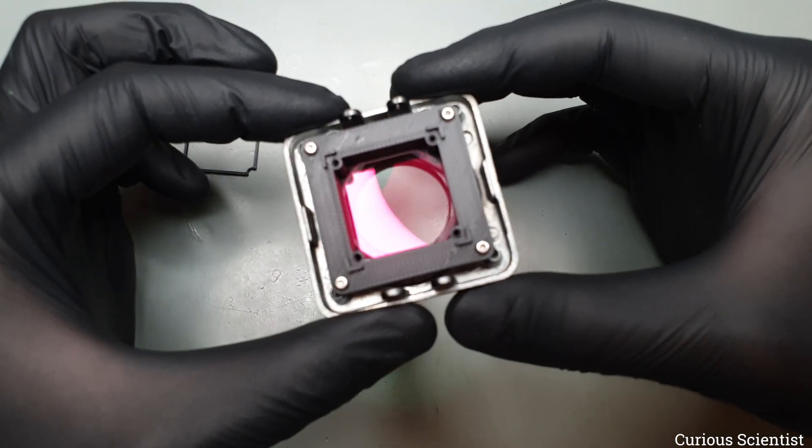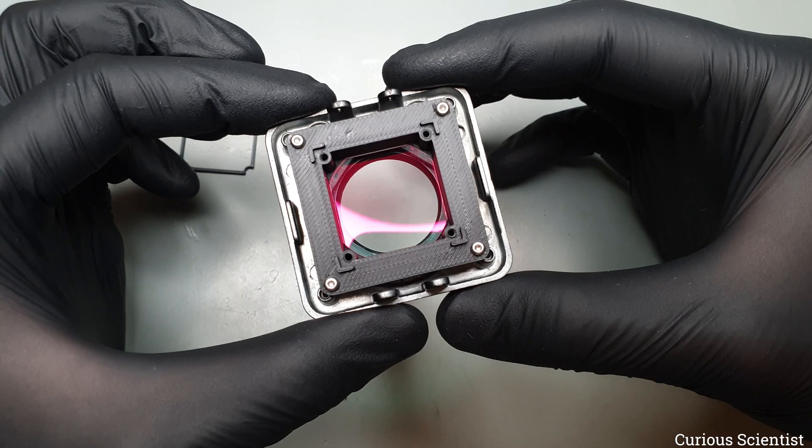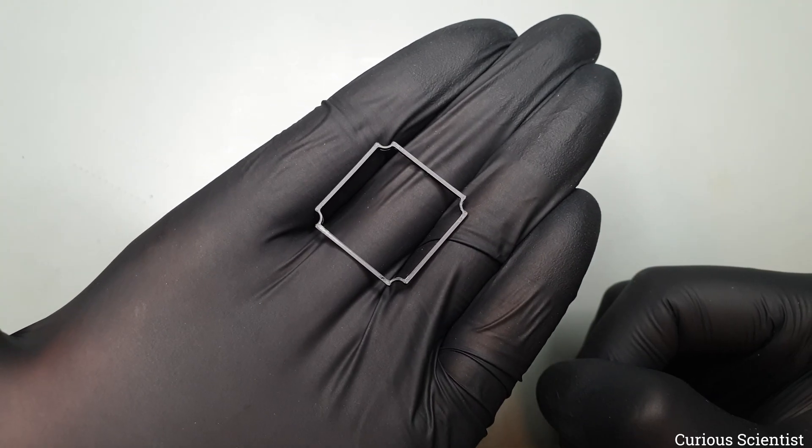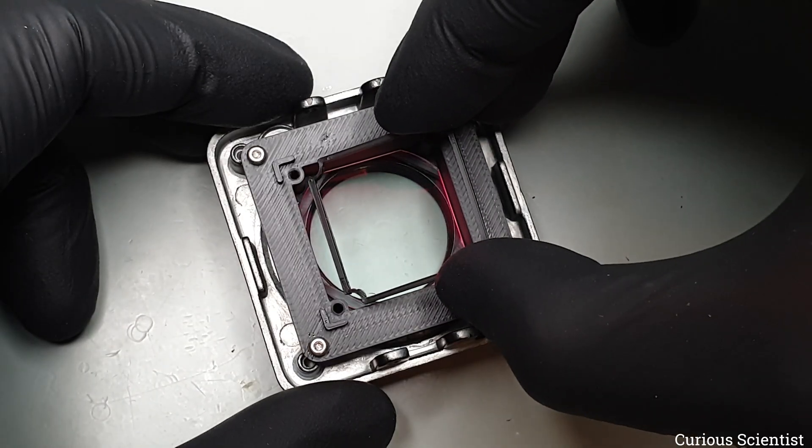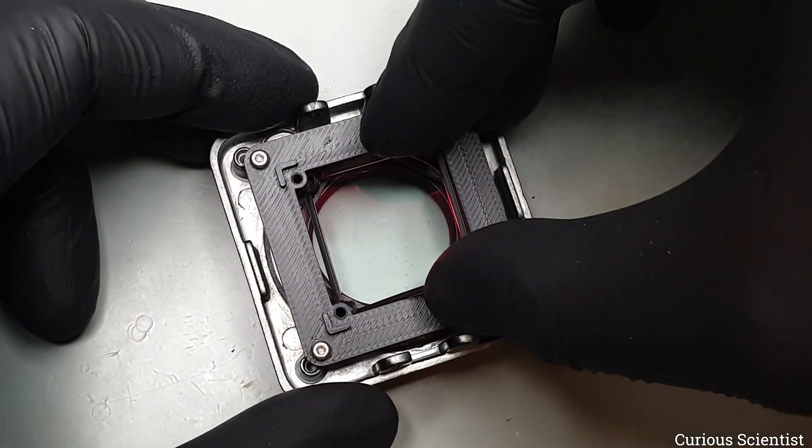I did not want to use glue, because it might end up in places where it should not be. So I printed a small frame thingy that I wedged into the seat. It provides enough support for the lens, and it does not block the path of the light coming from the lens.